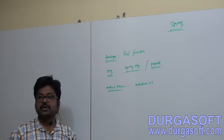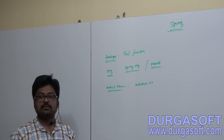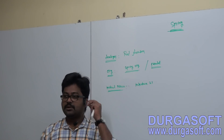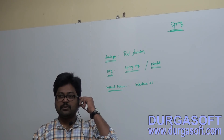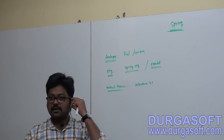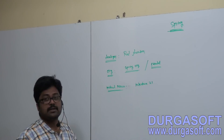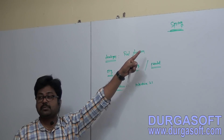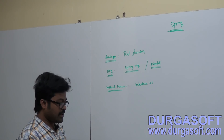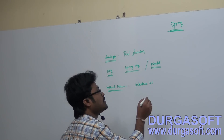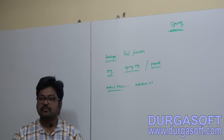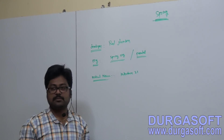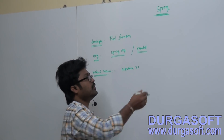Why did they name it Spring? The initial name was Interface 21, later changed to Spring. The reason is that Spring came as an alternative for EJBs — it is the main alternative resource for EJBs.